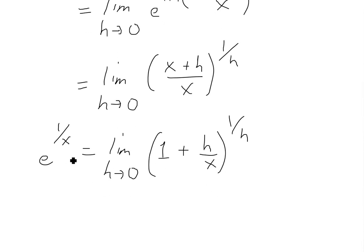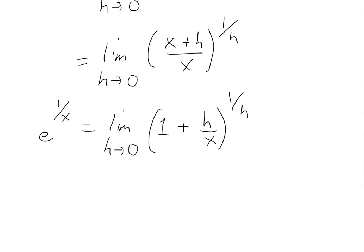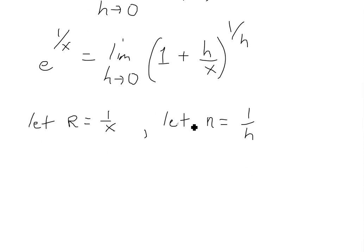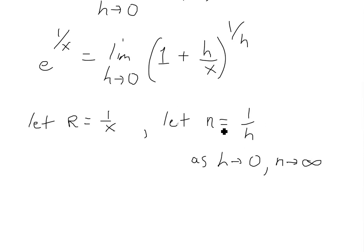So we've found a limit for e to the power of 1 over x. Now we want to write it in the form shown at the beginning of the video. To do that, let r equal 1 over x, and let n equal 1 over h. As h approaches 0, dividing 1 by a very small number means n approaches infinity.